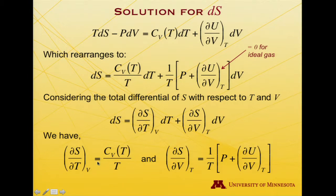That is, (∂S/∂T) at constant V is equal to Cv over T. And (∂S/∂V) at constant T is 1 over T times P plus (∂U/∂V), which would be zero for an ideal gas, but it doesn't have to be an ideal gas. This is a more general expression.